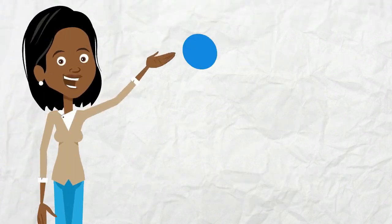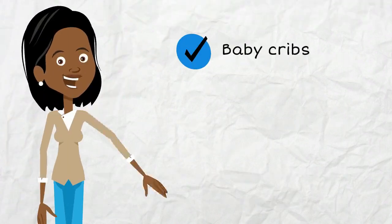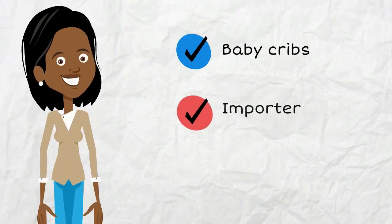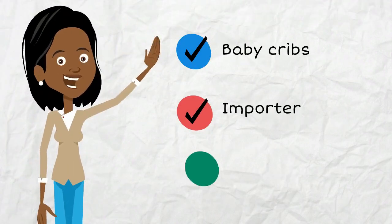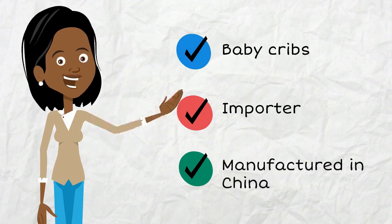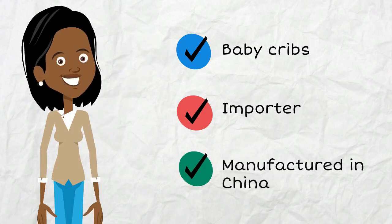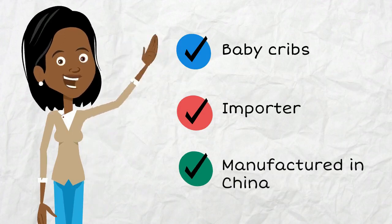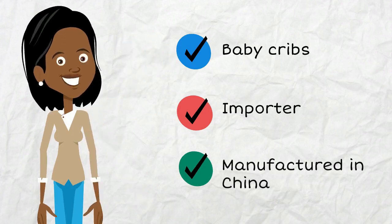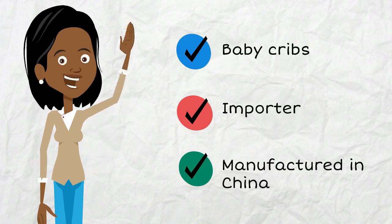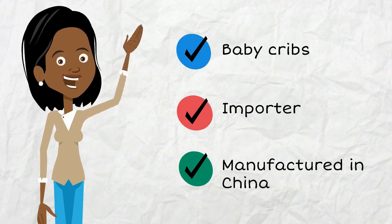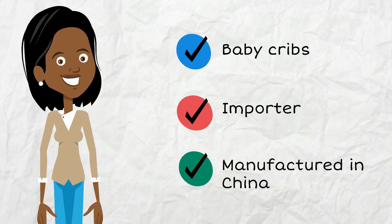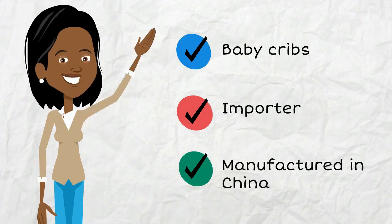In this first example scenario, I am an importer based in Canada, and the cribs that I import are manufactured in China. I completed all the required testing for my cribs, so now I'll start filling out the answers to these seven elements.